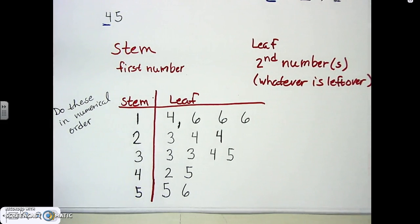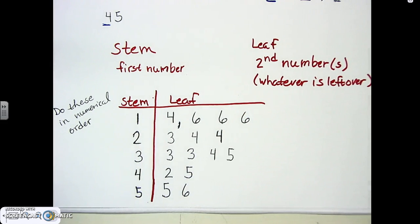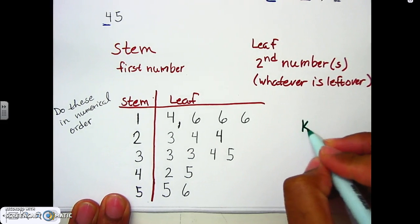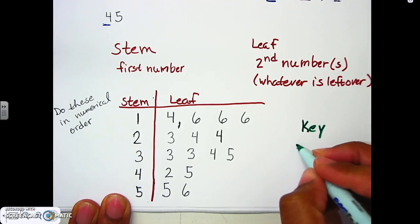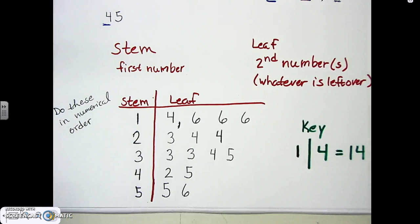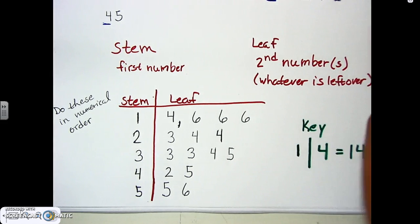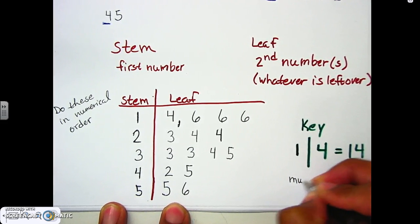The only other part you must have is a key. The key tells us what these numbers mean, because a stem of 1 and leaf of 4 could mean 14, 104, 1004 — it could be anything. So you need a key to make it clear. Write the key like this: '1 | 4 = 14.' People looking at the plot need the key to understand the original values. You must have a key.